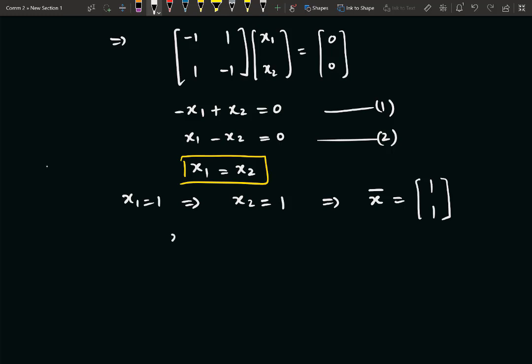So in this case, the magnitude of the eigenvector is equal to √2. So therefore, the modified eigenvector will be equal to [1/√2; 1/√2]. So this is the first eigenvector.